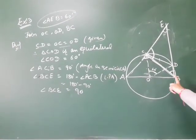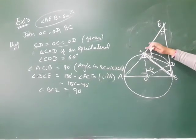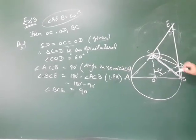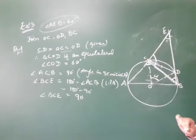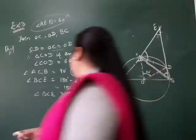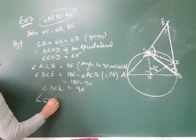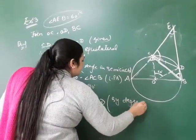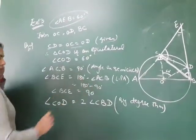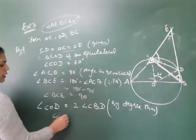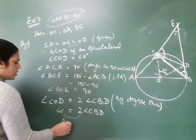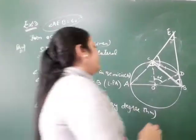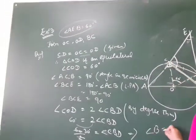Now, angle CBD: by the theorem that the angle at the center is twice the angle at the circumference subtended by the same arc, angle COD equals twice angle CBD. So angle CBD equals 60 divided by 2, which is 30 degrees.